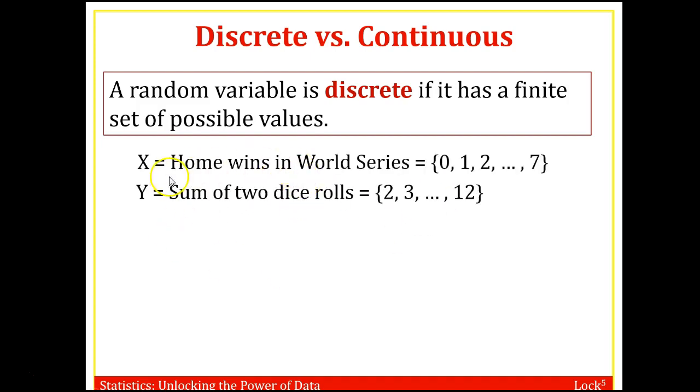So in our last example, say X is the number of home wins in a world series. Well, that's a finite list. They could win zero, the home team could win zero games or win all seven if the home team wins every single game in the series. The sum of two dice rolls, you could roll a pair of ones to get the two, all the way up to a pair of sixes to get a 12. This is a finite list.